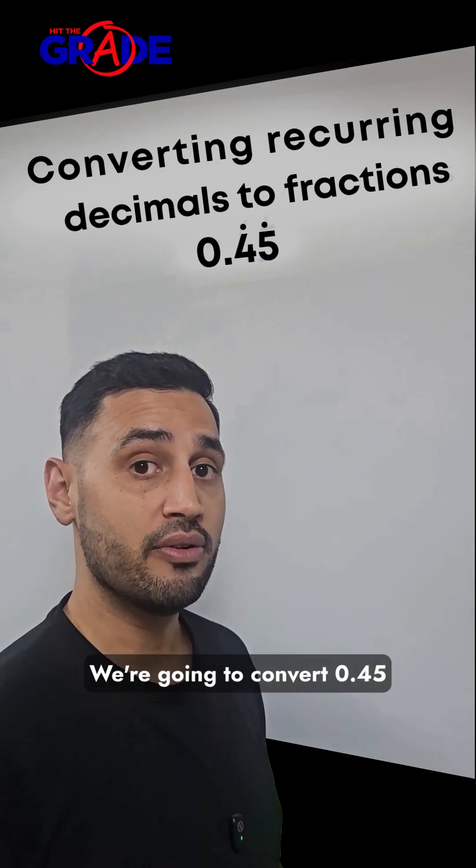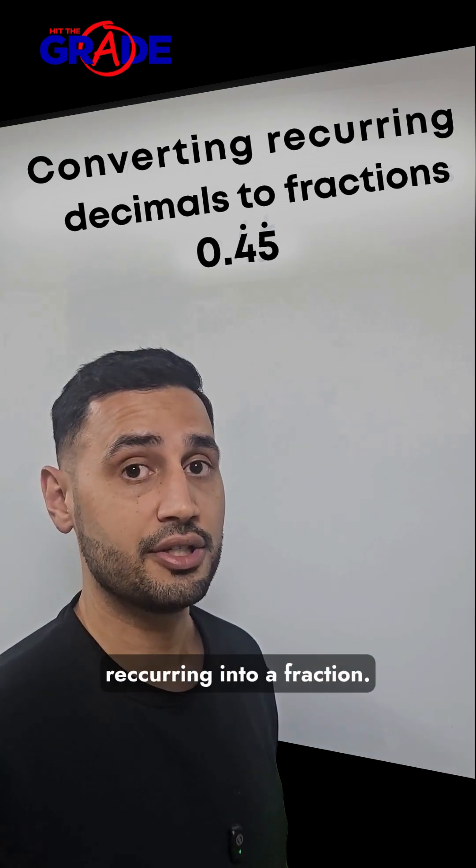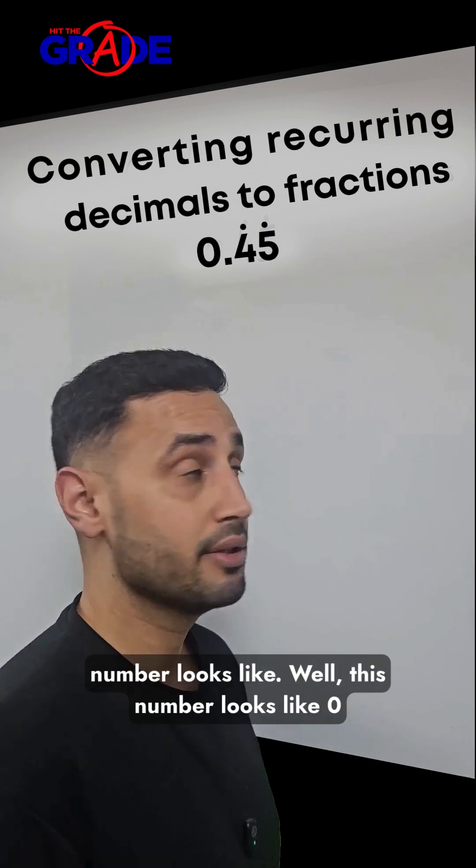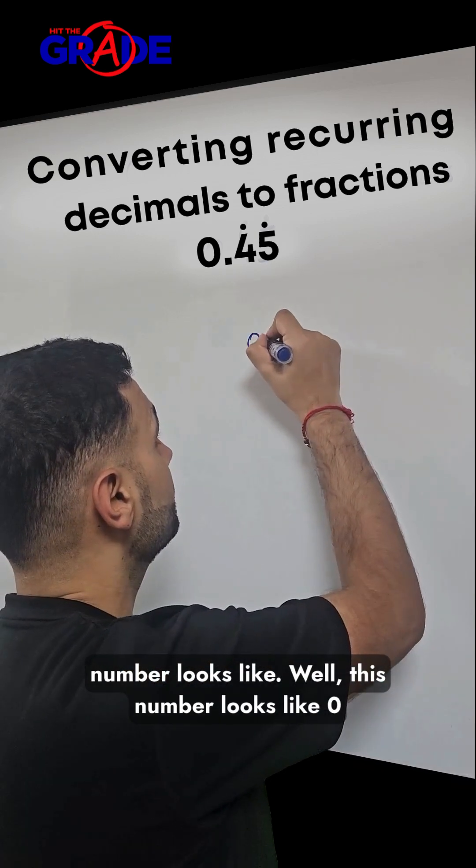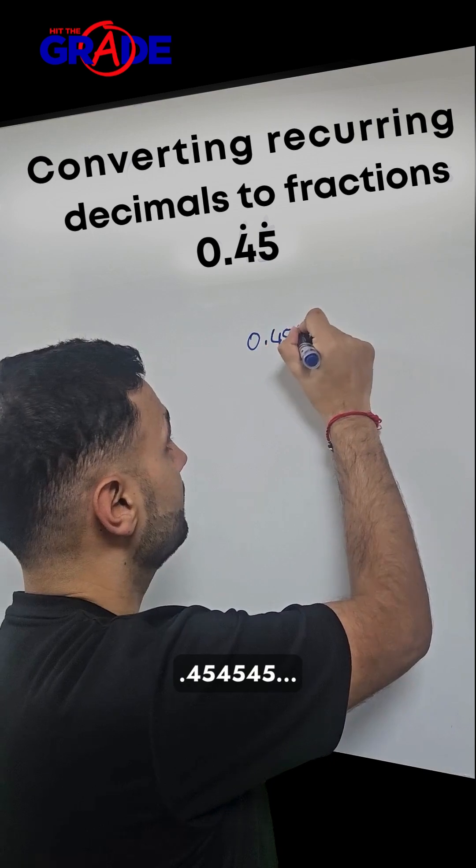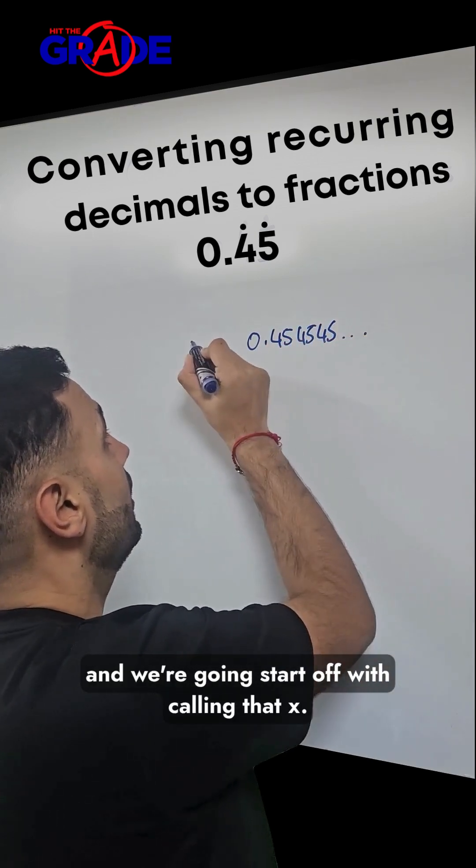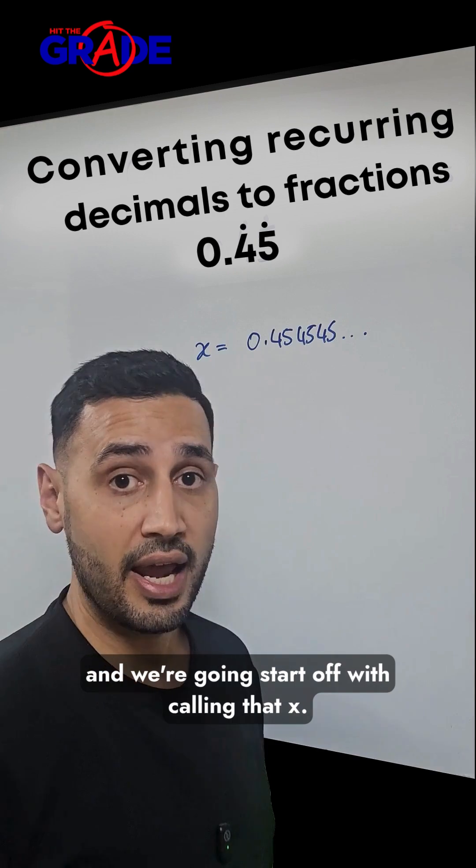We're going to convert 0.45 recurring into a fraction. Let's start off with writing out what that number looks like. This number looks like 0.454545 dot dot dot, and we're going to call that x.